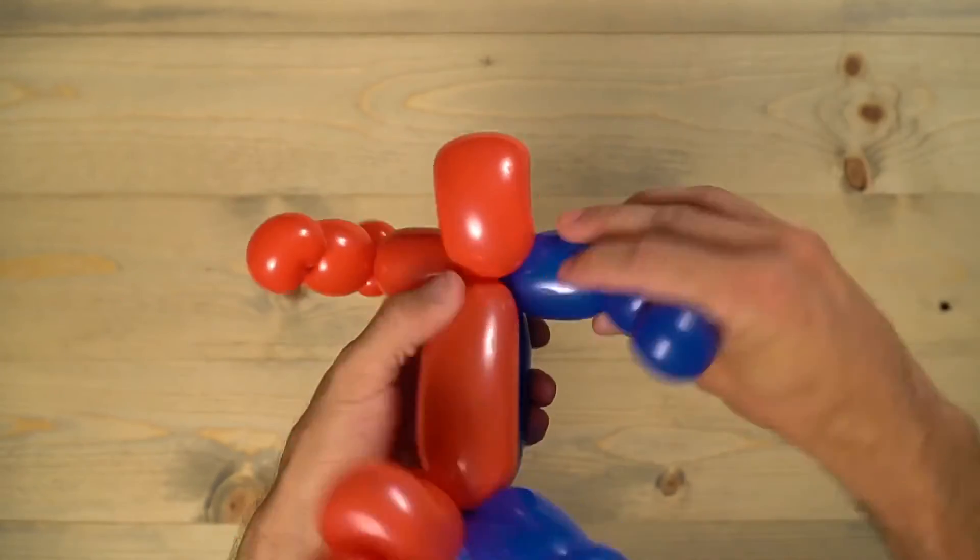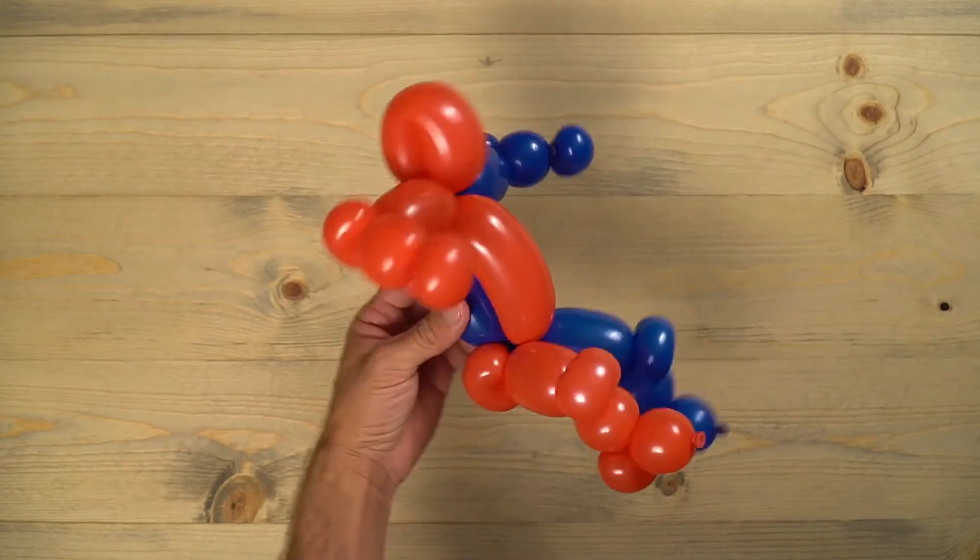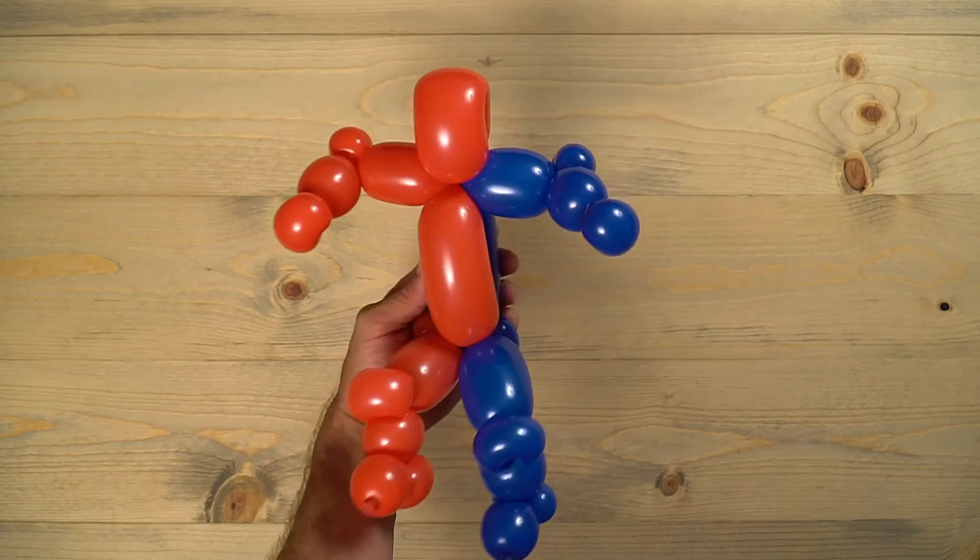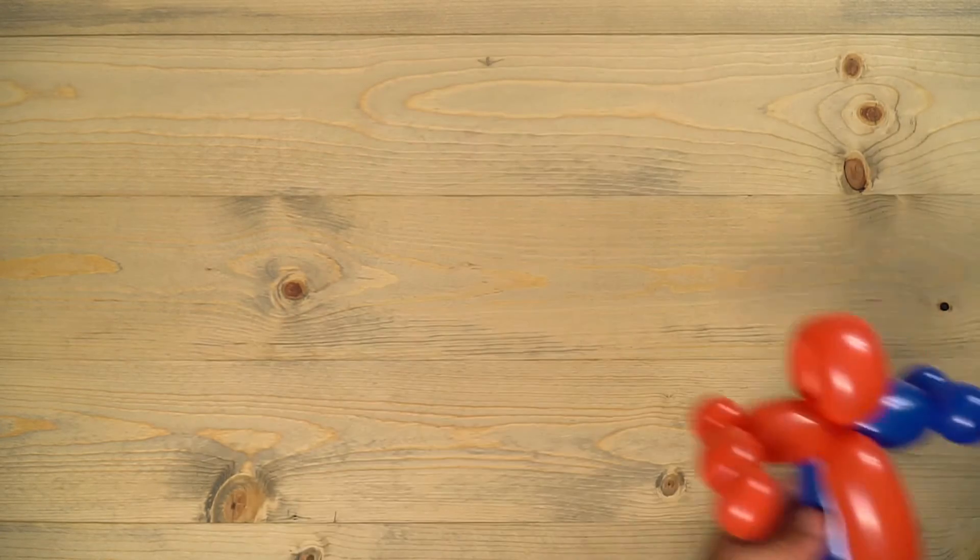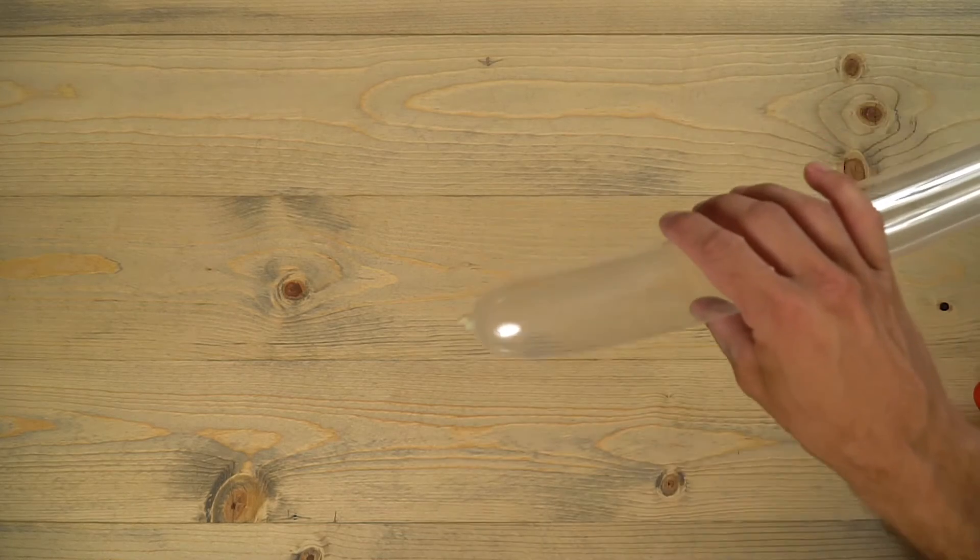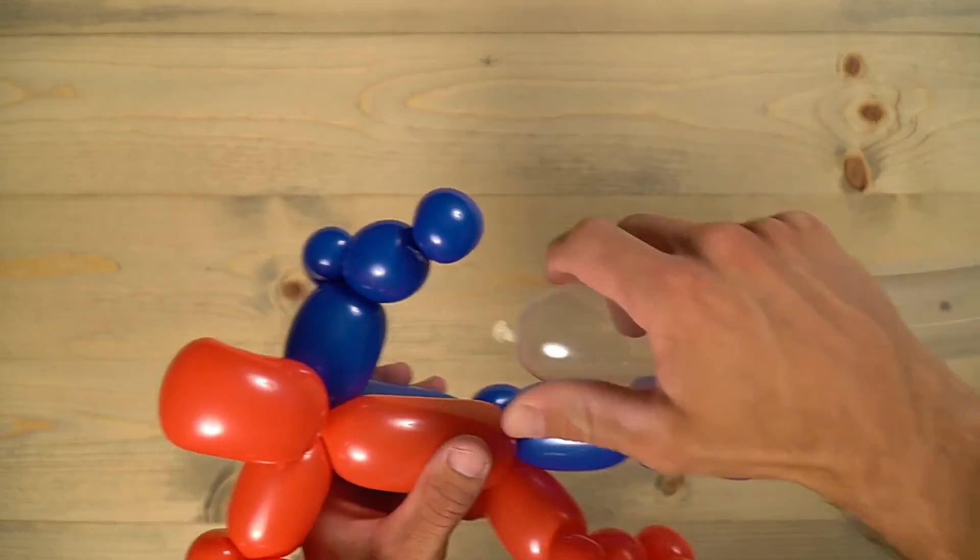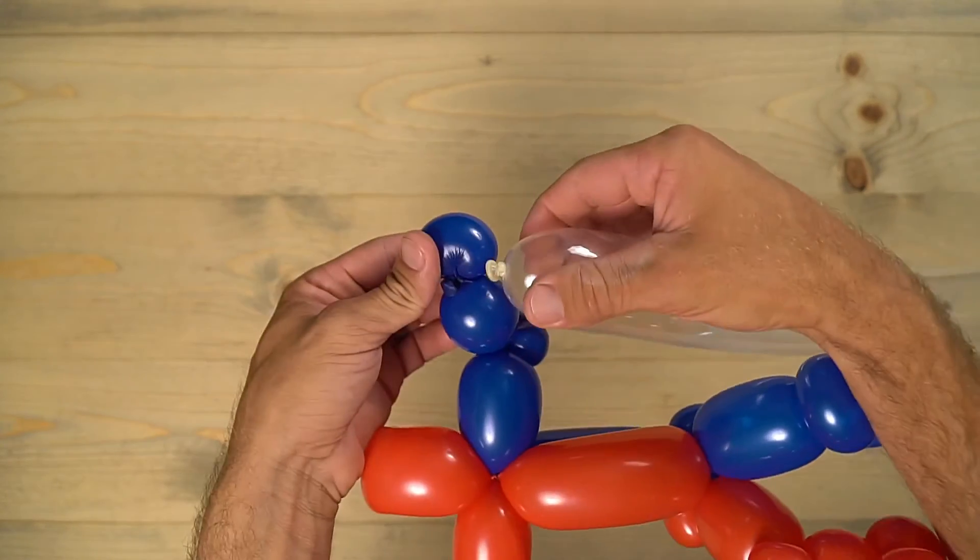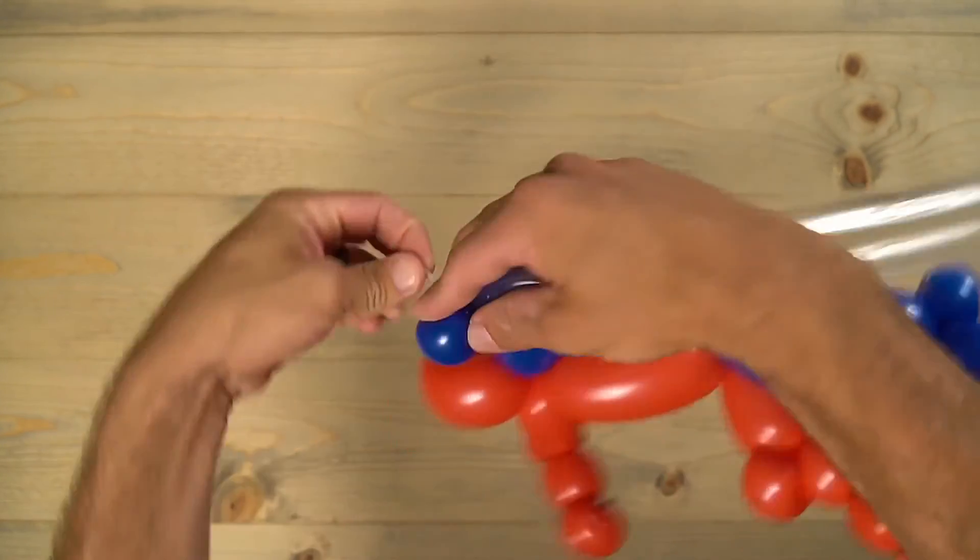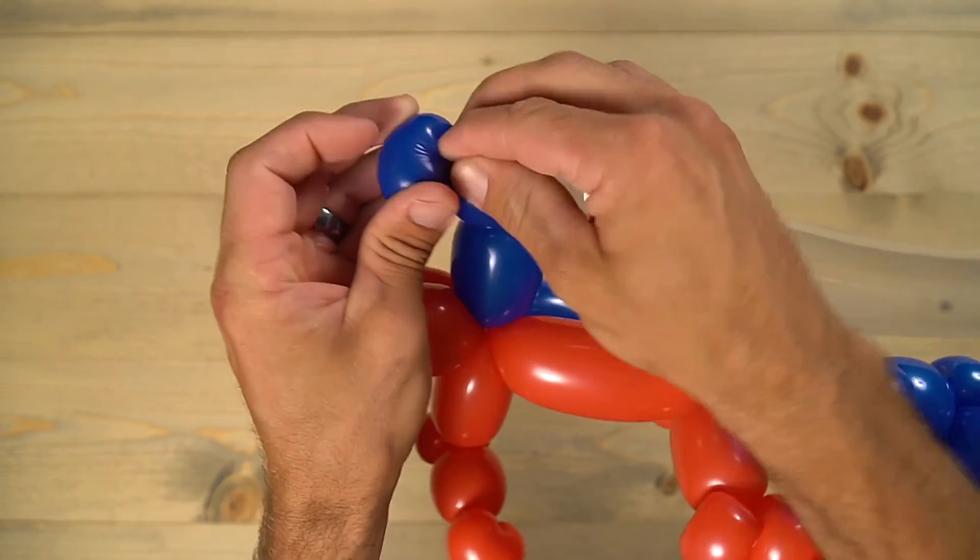And that finished off the body of Spider-Man. Grab that diamond clear there that's blown up all the way, the clear balloon. You can just pick one of the arms and then just wrap it around the fist there. I like to bring it around a couple of times and then I'm going to push it through right in there so it locks it into place.